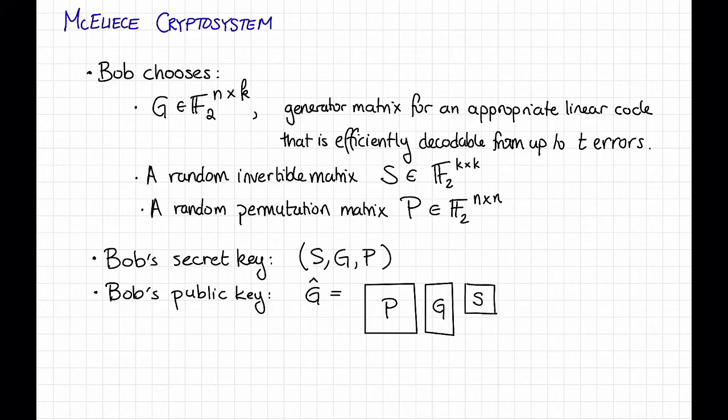So G hat is a tall and skinny matrix, the same dimensions that G has, N by K. And Bob is also going to throw the parameter T into his public key. Okay, so this tells us how Bob is going to generate his secret key and his public key.